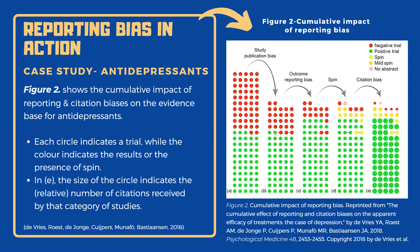Compounding the problem, in column E we see that positive trials were cited three times as frequently, noted by the larger size of the dots, and this further perpetuates these falsehoods. In this case study, the harmful cumulative effect of reporting bias almost eliminated a body of null and negative results for antidepressants from the scientific literature base.